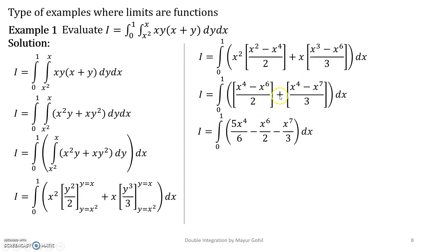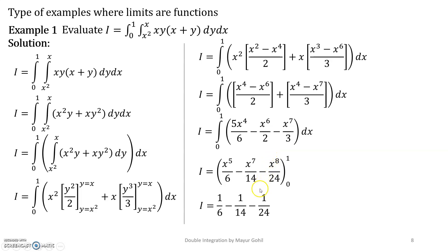On simplification, the function reduces to 5x⁴/6 − x⁶/2 − x⁷/3. Your entire function is now in terms of x — this is as simple as single-variable definite integration. Performing the definite integration and substituting limits gives 1/6 − 1/14 − 1/24. Simplifying, the answer is i = 3/56.